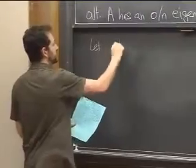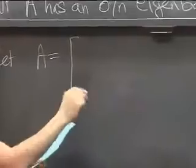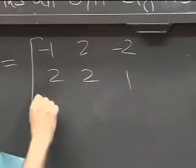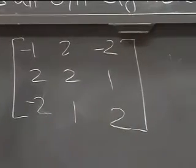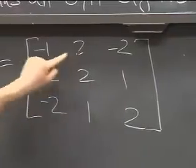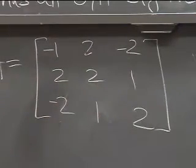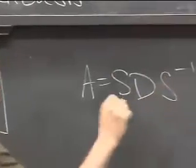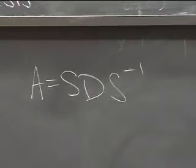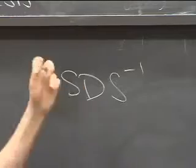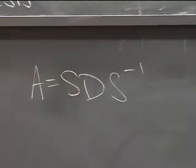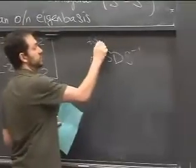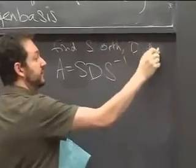After this example I'll move on to quadratic forms. We're given a 3×3 matrix A — one I made up — and we observe it's symmetric: the off-diagonal entries match (−2, −2; 1, 1). The task is to find an orthonormal eigenbasis, or equivalently write A = SDS⁻¹ where S is orthogonal and D is diagonal.